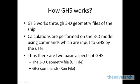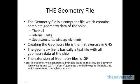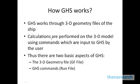The 3D geometry file input into GHS is called the GF file; it has the extension .GF. The commands used to perform calculations on this geometry file are contained in a file called the run file — a series of commands which the user types and saves. These are the two basic aspects of running GHS: the GF file and the run file.